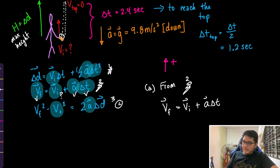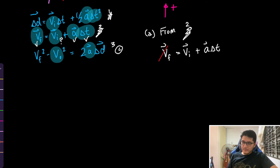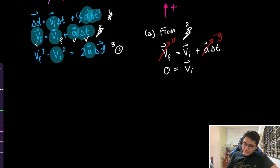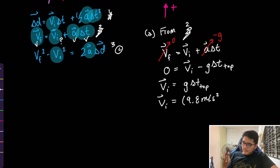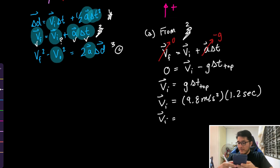Rewrite equation two in vector form: 0 = v_initial + (−g)(delta t to the top). Isolating for v_initial gives v_initial = 9.8 m/s² × 1.2 s. Note: if you solved this differently and still get the right answer, that's also correct. This gives approximately 12 meters per second.